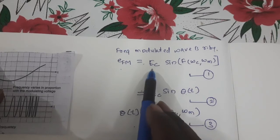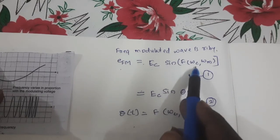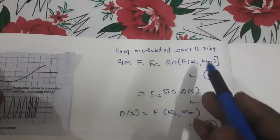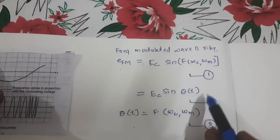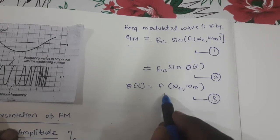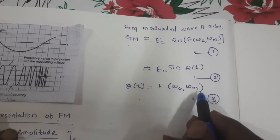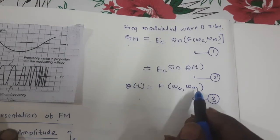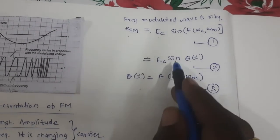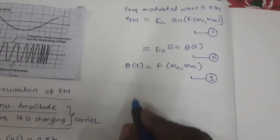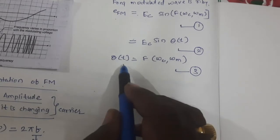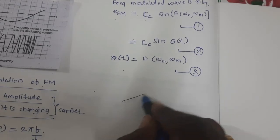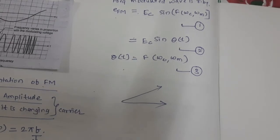In equation one, eFM = eC · sin(f(ωc, ωm)). In equation two, eFM = eC · sin(θ(t)). According to equations one and two, we can write θ(t) = f(ωc, ωm). To understand how θ(t) is a function of ωc and ωm, we need to draw some vector relations.